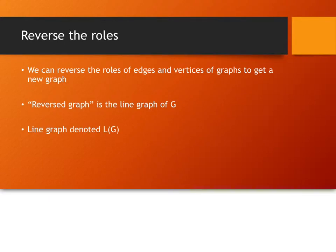We can kind of reverse the roles of the edges and vertices, and this reverse graph is known as the line graph. What we're going to do is take each edge — E1, E2, E3, whatever — in our original graph, and then make a new graph where each edge is replaced by a vertex. That vertex is going to be connected to some other vertices if the edges in our original graph were connected through a vertex. The line graph is denoted L(G), the line graph of graph G.